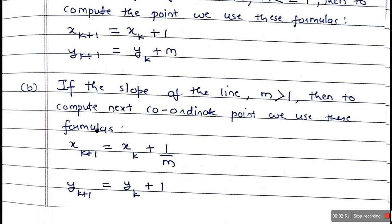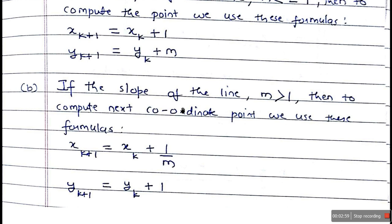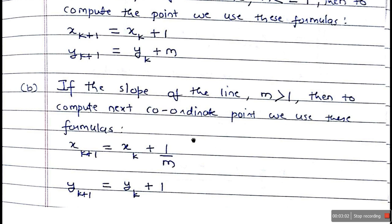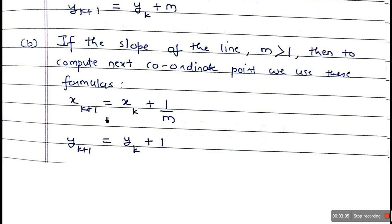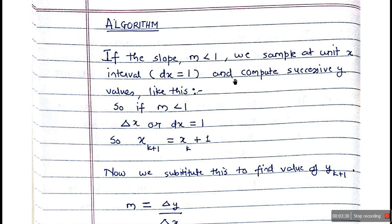When M is less than or equal to 1, those were the formulas. Now, if the slope M is greater than 1, to compute the next coordinate point we use: XK+1 equals XK plus 1/M (add 1 over M to the previous X value), and YK+1 equals YK plus 1 (add 1 to the previous Y coordinate).